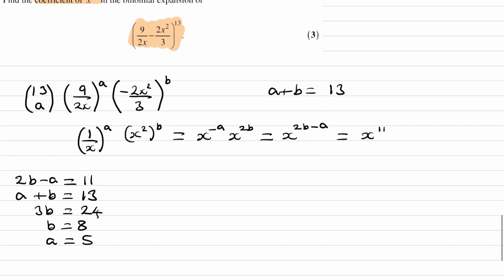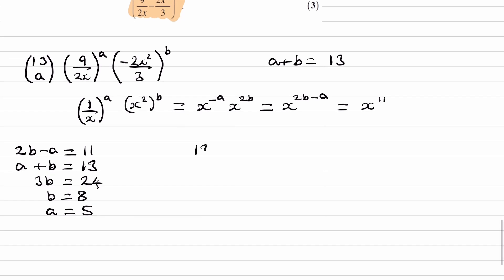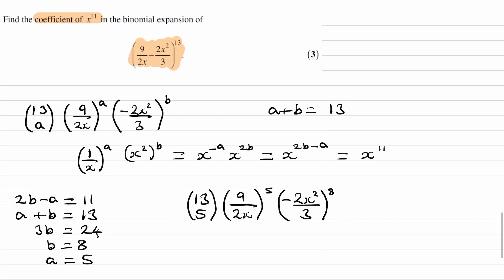So we're after the coefficient. So we can now put that back into the expression that we have. 13 choose 5 times 9 over 2x to the power of a, which was 5, times minus 2x squared over 3 to the power of 8. So we can see why this gives us x to the power of 11 now more clearly, hopefully.